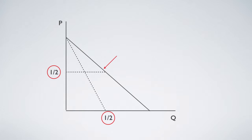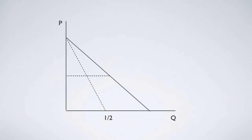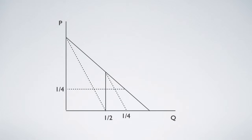Another firm enters the market and becomes a competitive duopolist. It will pick up the remaining demand curve and produce half of the remaining segment — that is one quarter — and capture one quarter of the vertical segment.